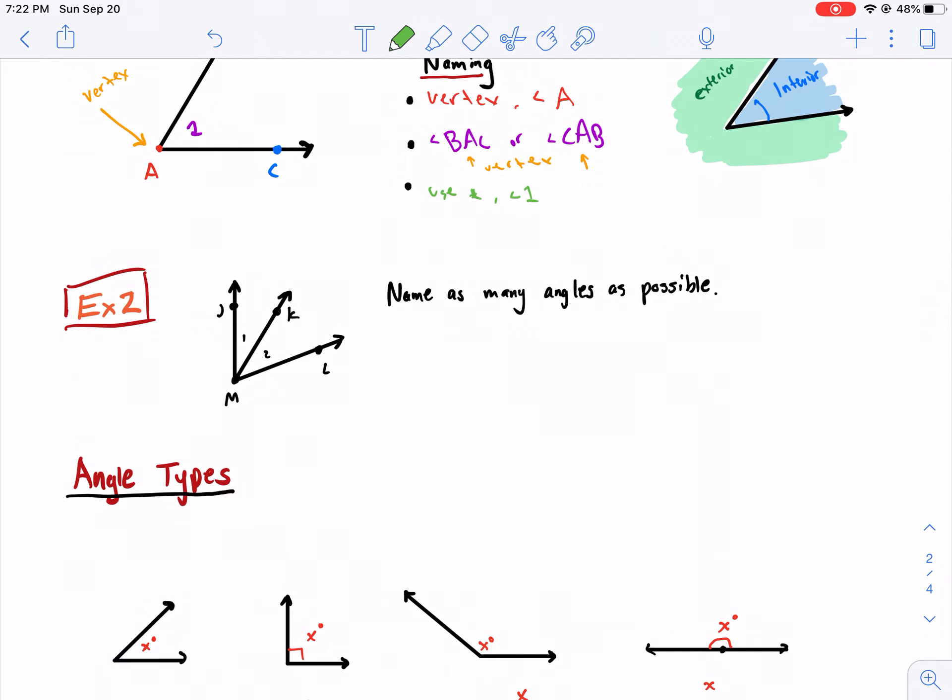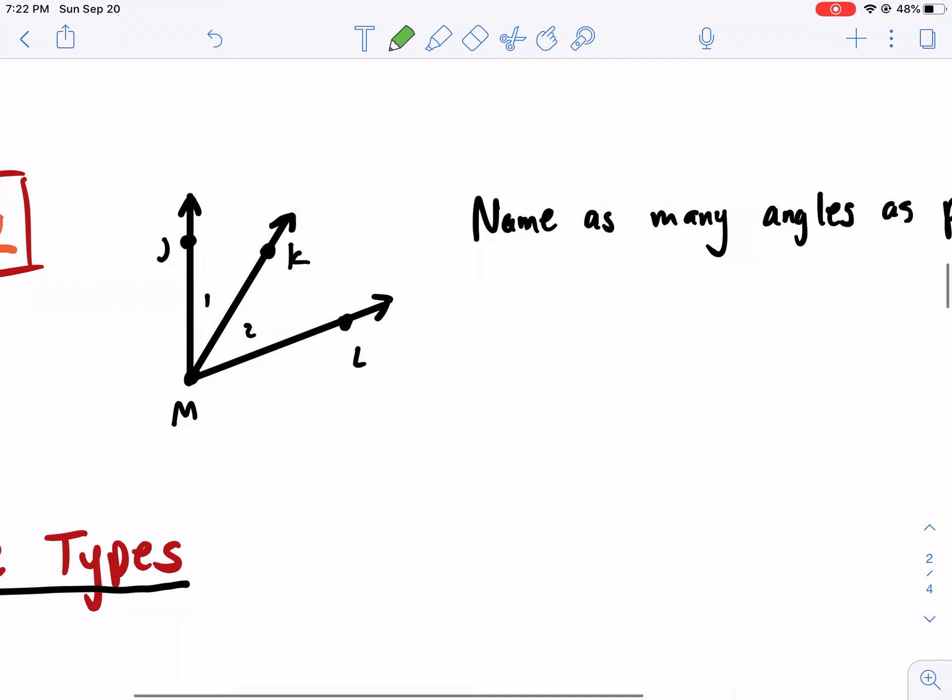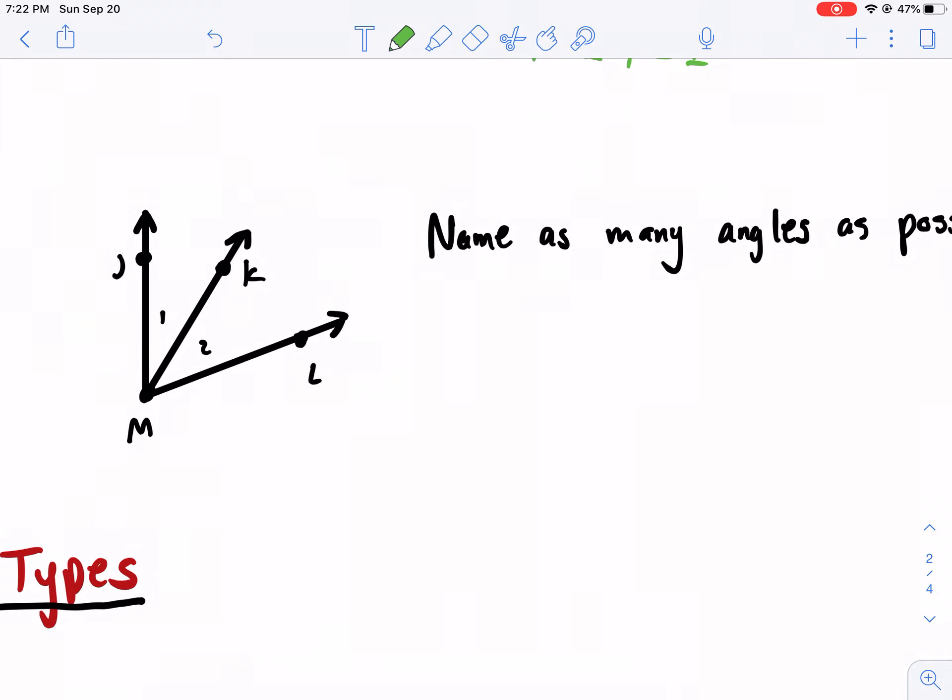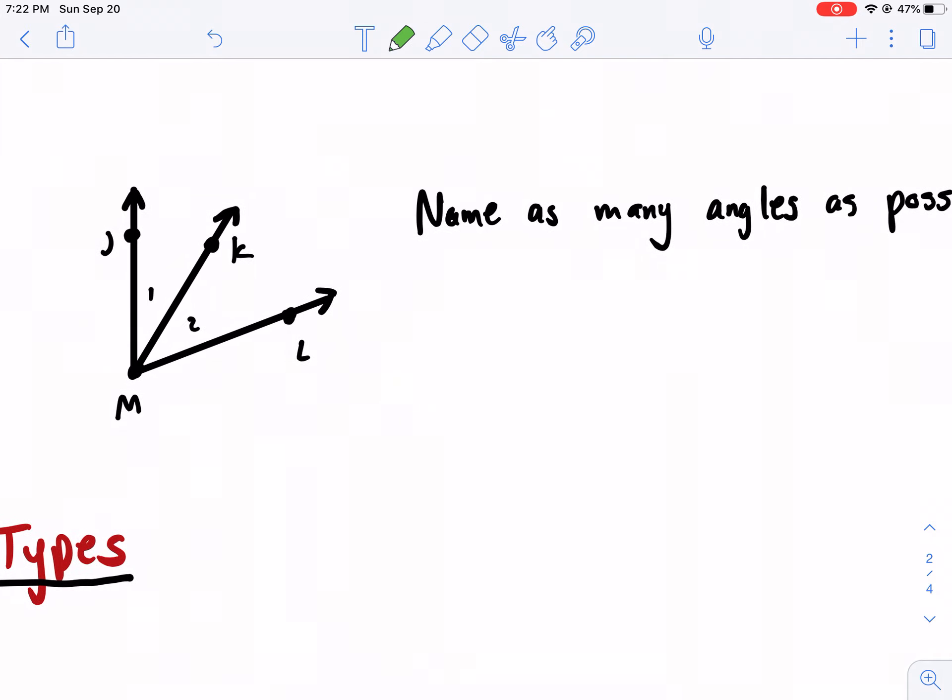Example two, name as many angles as possible. So we can have Frank, Patricia, Stan. I'm just kidding. So we have a bunch of different options here. We can call one angle one. We can go angle two. We can go angle JMK. That's the vertex. Angle LMK. That's the vertex. We can go angle KML. I mean, there's so many different possibilities. We could go angle JML, and so on and so forth.